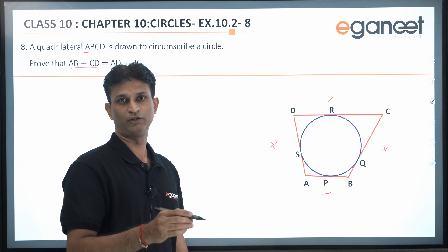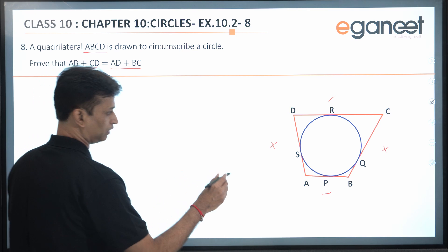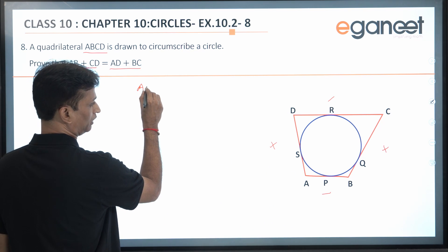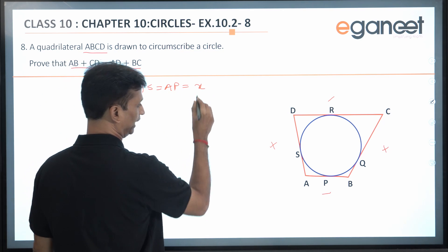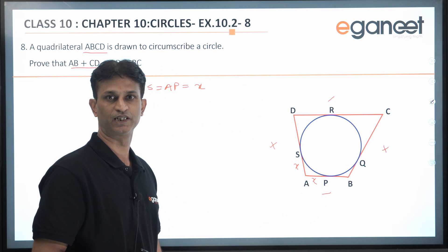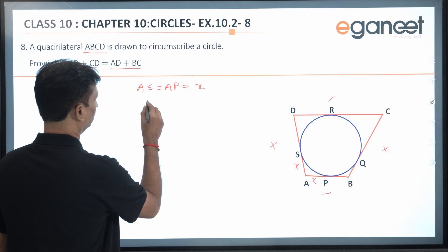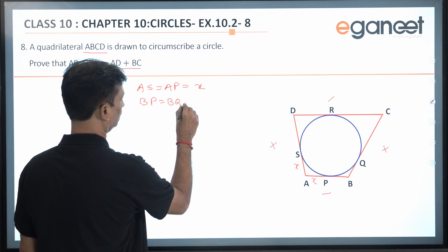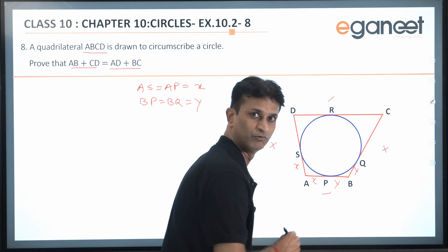Let's get started. We are again using the property of tangents drawn from an external point. Here I can say AS = AP. Suppose we call that as x. The tangents drawn from an external point to the same circle are equal. Similarly, we can say BP = BQ = y.